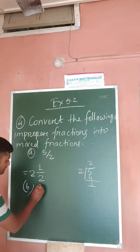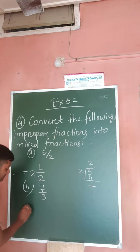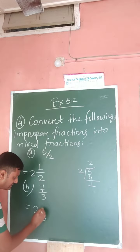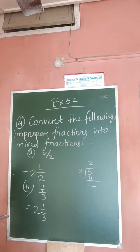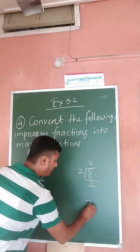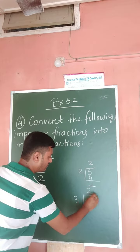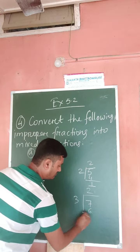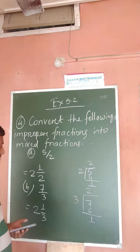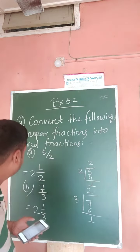Number B is 7/3. Seven divided by three — three twos are six, remainder one — so it becomes 2 and 1/3. I think all of you already learned this in class four.